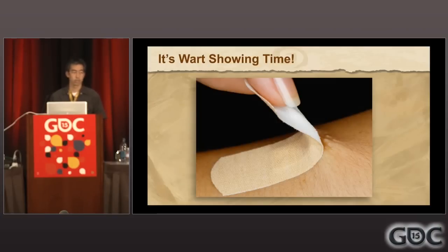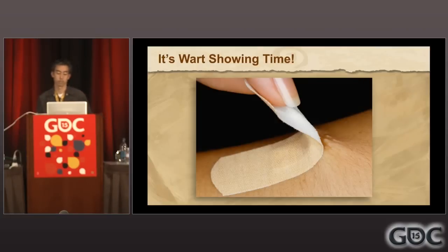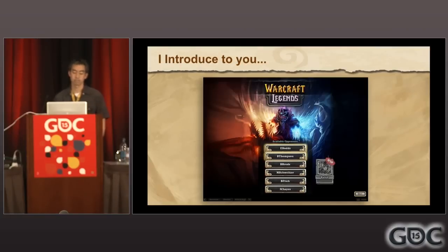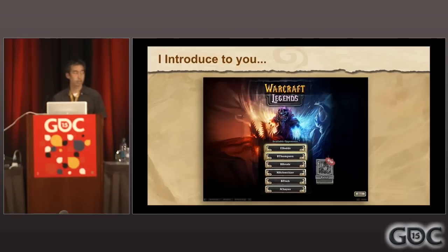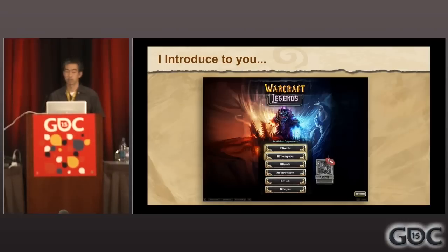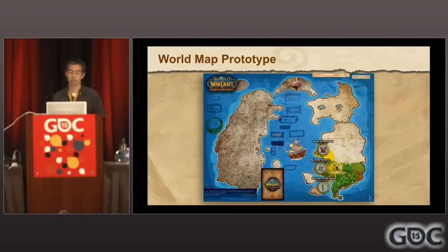As a warning, people outside of Team 5 have not seen these images, and maybe a lot of people on Team 5 have not seen these images just because the team is growing. So I introduce to you Warcraft Legends. This is a build called Fire and Ice, and this was the build that got us greenlit. At this time we had maybe the Rogue and the Mage, and then Warlock was still a work in progress. But clearly this is not what we wanted for Hearthstone.